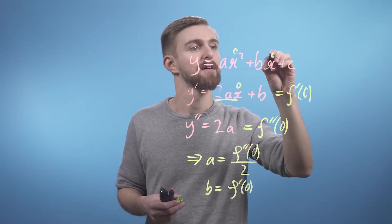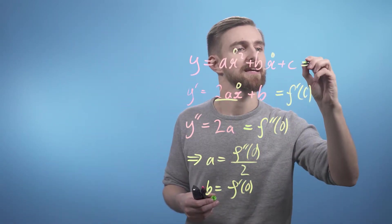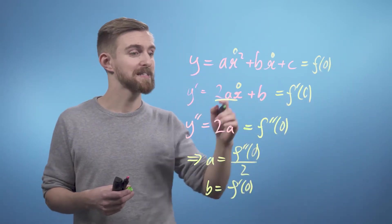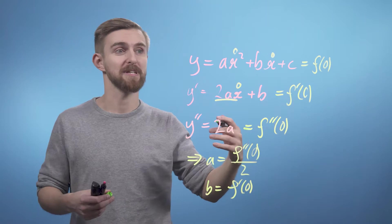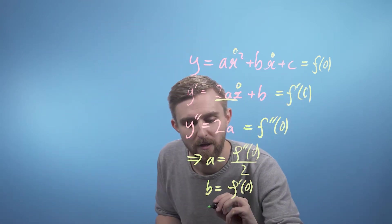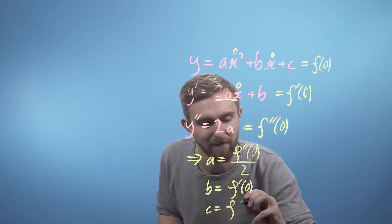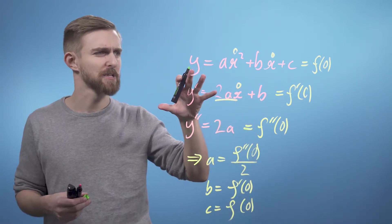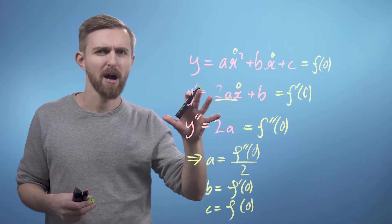Lastly, subbing in 0 here and here, and setting this thing just equal to f of 0, we can say that clearly c is also just equal to f of 0. c equals f at 0.